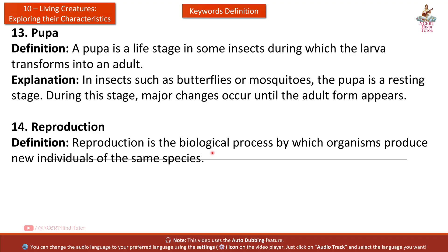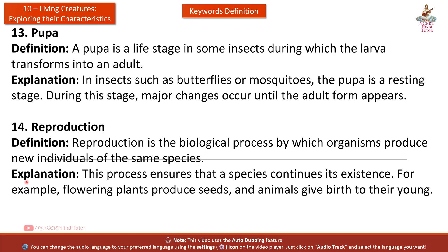Fourteenth: Reproduction. Definition: Reproduction is the biological process by which organisms produce new individuals of the same species. Explanation: This process ensures that a species continues its existence. For example, flowering plants produce seeds and animals give birth to their young.